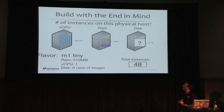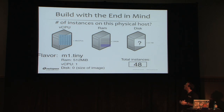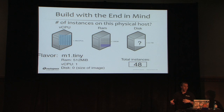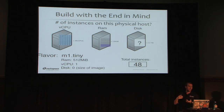When sizing a private cloud, every compute node has three key resources: vCPUs, RAM, and disk space — plus network utilization and throughput. Using the default flavors starting with M1 Tiny — 512 MB RAM, 1 vCPU, disk size zero — if you fill one compute node, the RAM-to-CPU ratio is way off. You consume all your CPUs, use almost no RAM, and with disk size zero you can't plan for disk capacity at all. Total instances on a node like that is about 48.